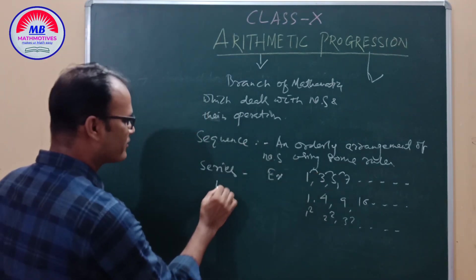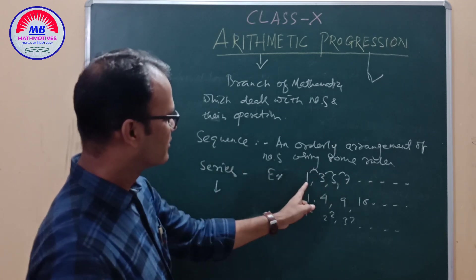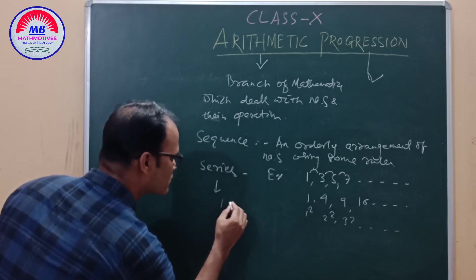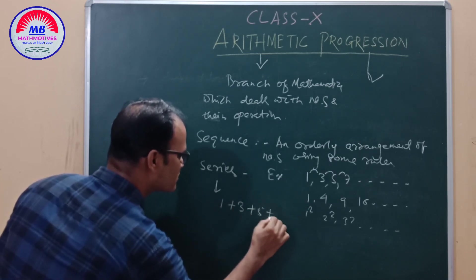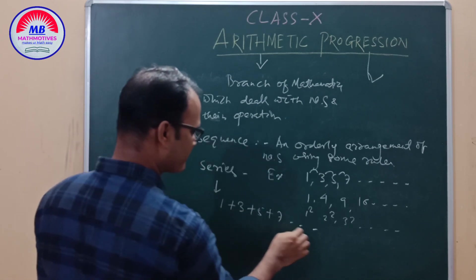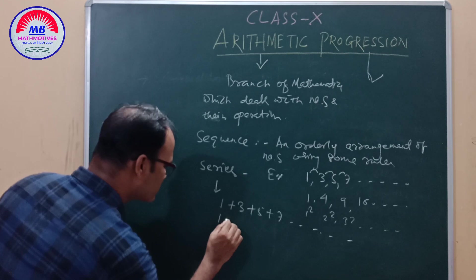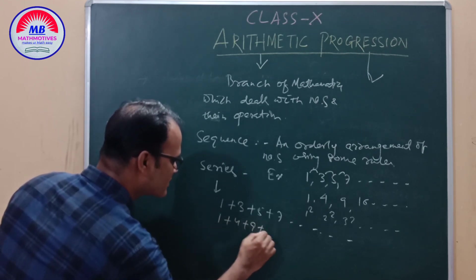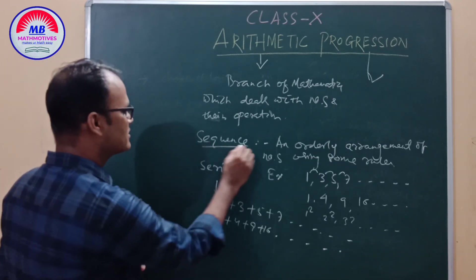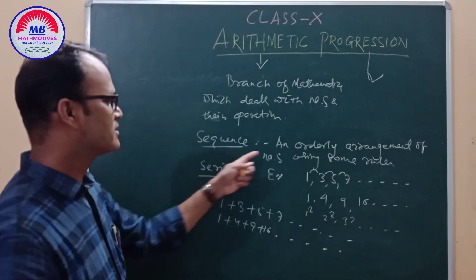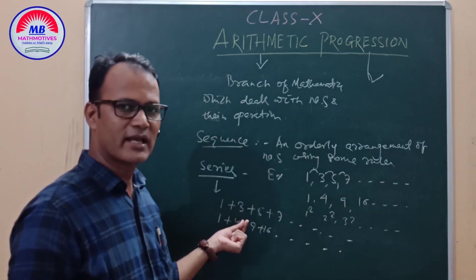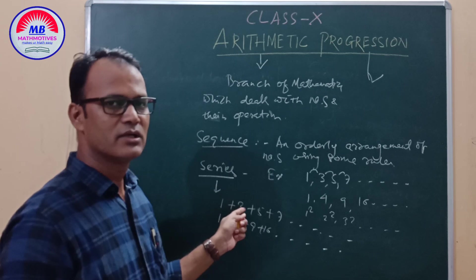What is a series? If we write a sequence using addition signs — for example, 1 + 3 + 5 + 7, or 1 + 4 + 9 + 16 — we call it a series. So, a sequence is an orderly arrangement of numbers using some rules, and if we use addition signs, it converts into a series.